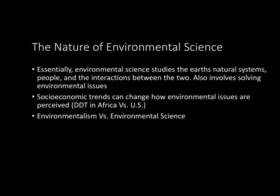Environmental science studies the Earth's natural systems, people, and the interactions between the two. This also involves solving environmental issues. How someone values an environmental issue can really depend on socioeconomic trends, as discussed in the book with the difference between DDT in Africa and DDT in the United States. An important differentiation to make is between environmentalism and environmental science: environmentalism is a social issue bent strictly on defending the natural world, while environmental science is a study of the interactions between humans, the environment, and solutions to problems between the two.